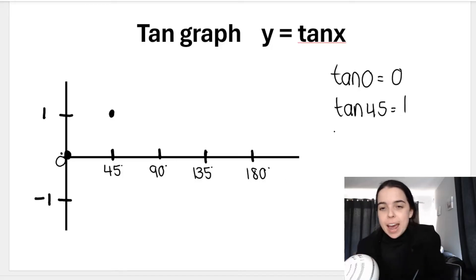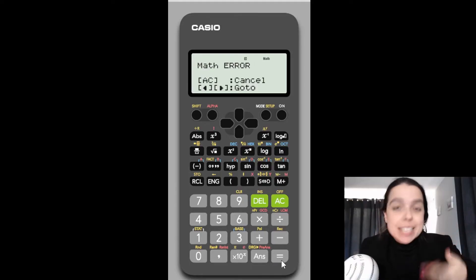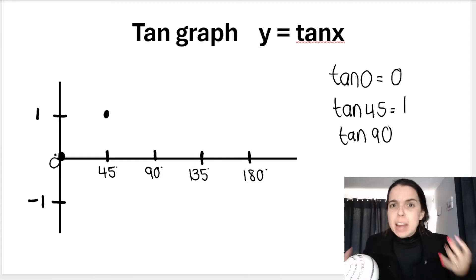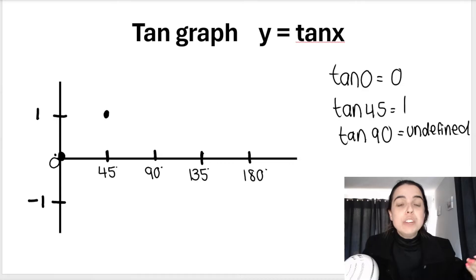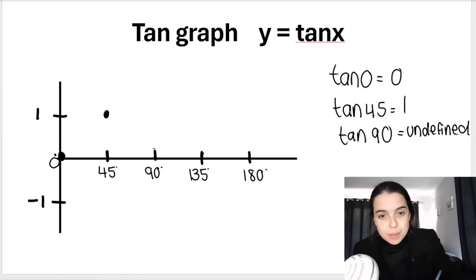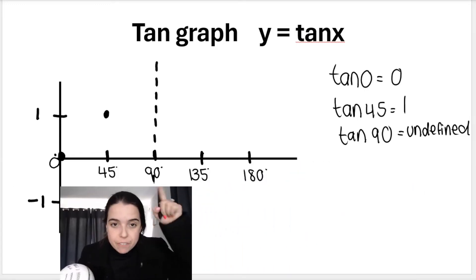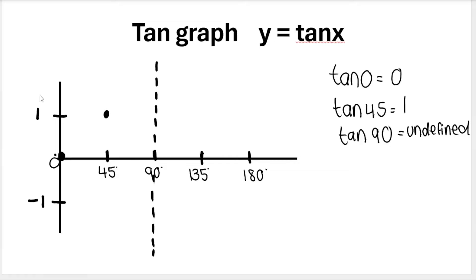Now type in tan 90. You will see a very interesting thing happening. When I type in tan 90 and press equals, my calculator says math error. What does this mean? This means that when my x value is 90, my y value doesn't exist — my function does not exist at this point. It is undefined. How do we represent this on a graph? We draw a dotted line known as an asymptote. Where x is 90, we draw a vertical asymptote that goes all the way down. This means that when x is 90, the function does not exist — there are no y values that exist when x is 90.